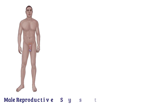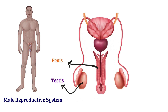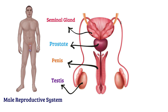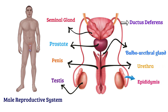Male reproductive system: testis, penis, prostate, seminal gland, ductus deferens, bulbourethral gland, urethra, epididymis.